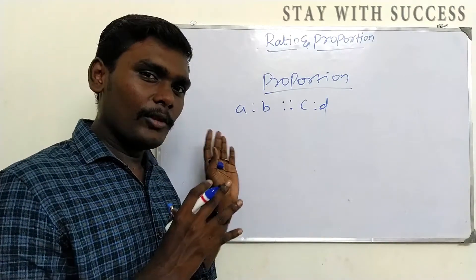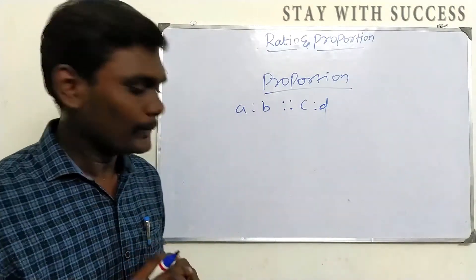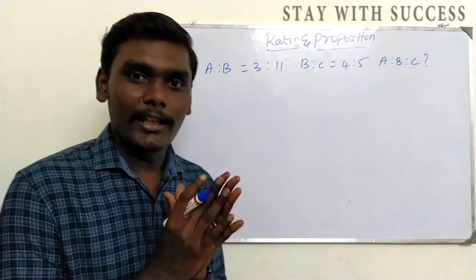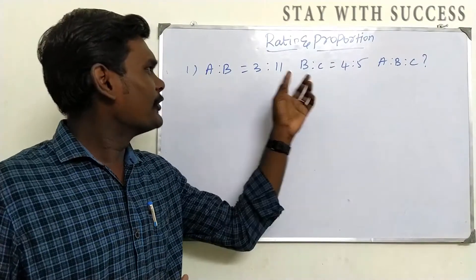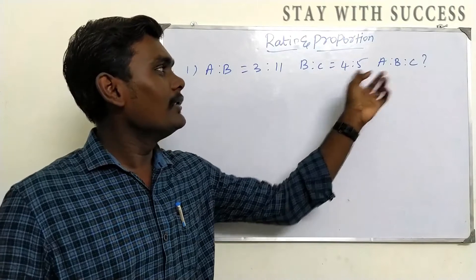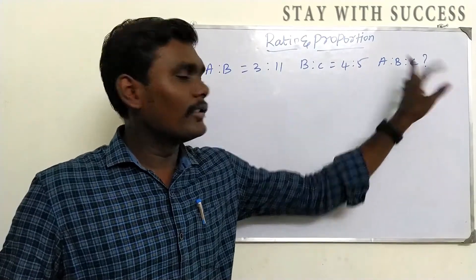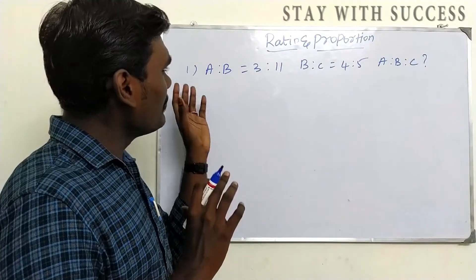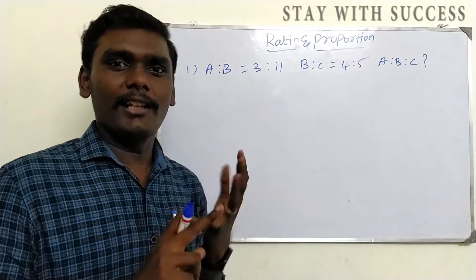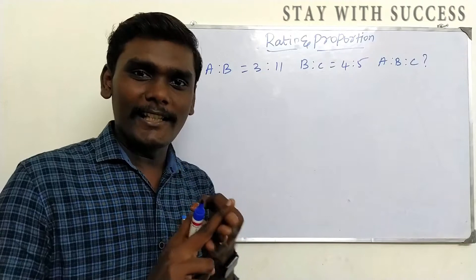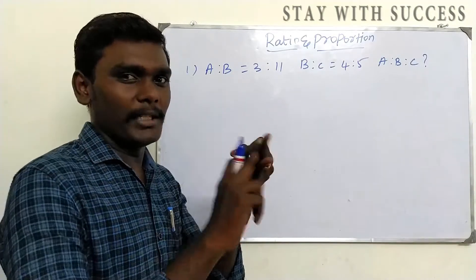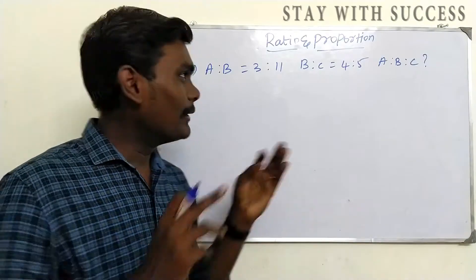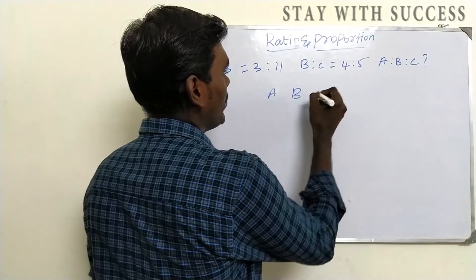Now we have a trick, so we will start the problems first. Now we have a basic sum — let's look at the sum. A is to B: 3 is to 11. B is to C: 4 is to 5. Find A is to B is to C. This is a good trick I am telling you. Let's look at the number of variables — A is to B, B is to C — so there are 3 letters: A, B, C.